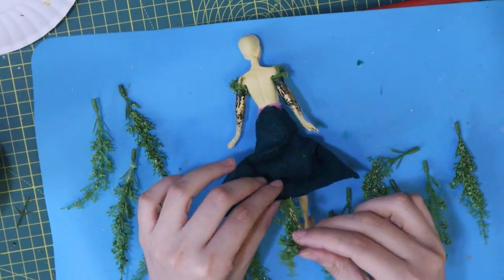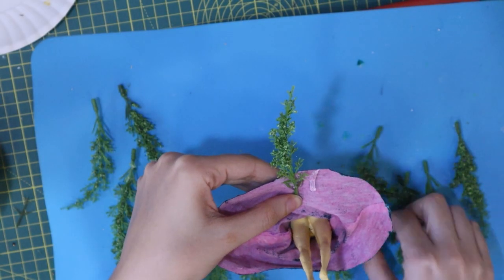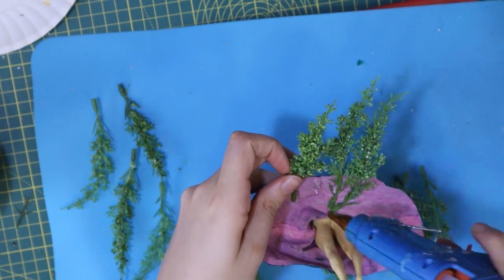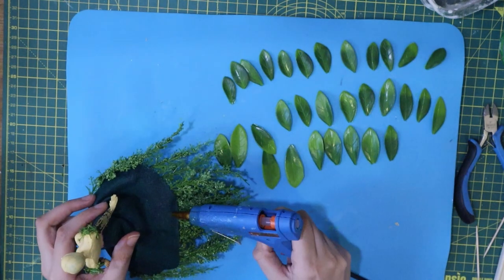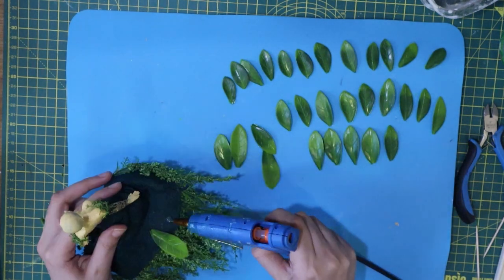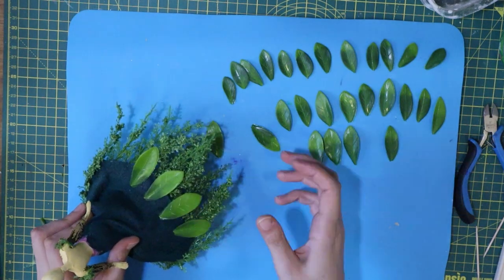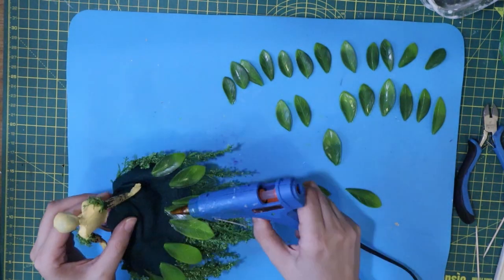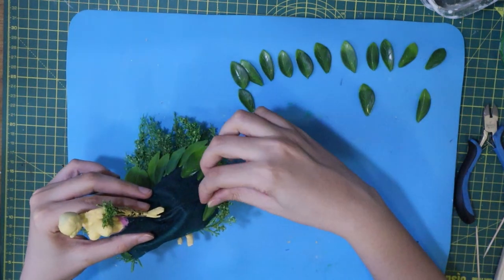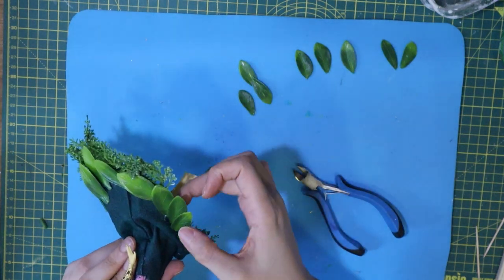Afterwards I hot glue a bunch of different kinds of artificial leaves and branches to my fairy's gown. I'm carefully covering all the edges.